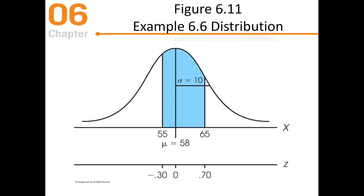For this example, you're going to use the D column. Look up z=0.3 and write down 0.1179. Then look up z=0.7 and write down 0.2580. Add 0.2580 and 0.1179 together — that gives you the probability of randomly selecting someone with a test score greater than 55 but less than 65.